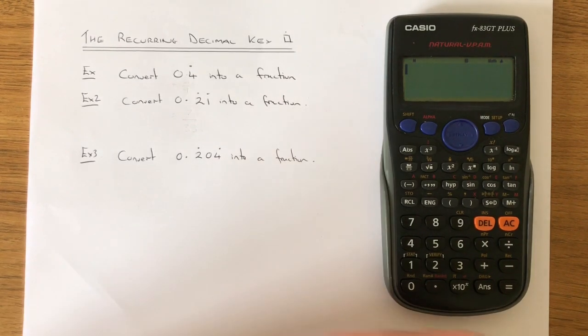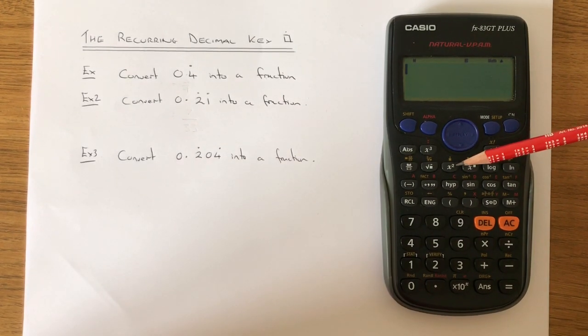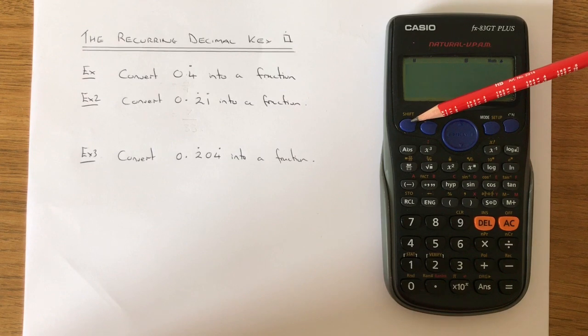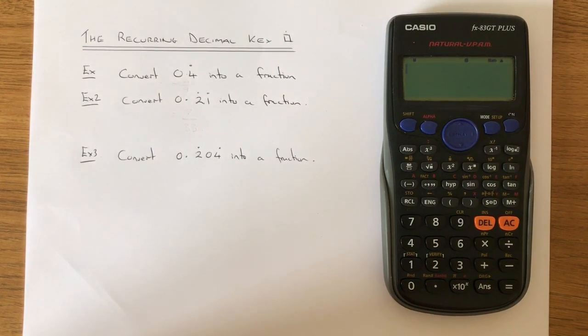You'll find this key on the second function of the x squared key if you have a Casio calculator, and to get this up you'll press shift x squared.